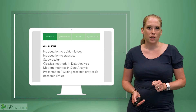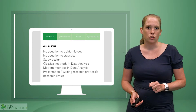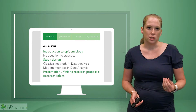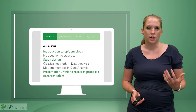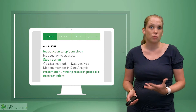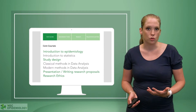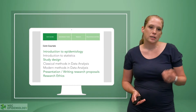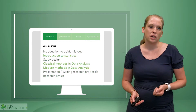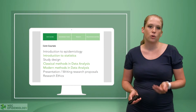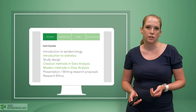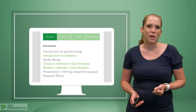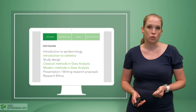There are actually two pathways in our core courses. One addresses epidemiology — the introduction, study design, presentation, how to write a research proposal, and something really important: research ethics. The other pathway is an introduction to statistics, followed by classical methods and modern methods in data analysis, which give you the true basis of doing good research.